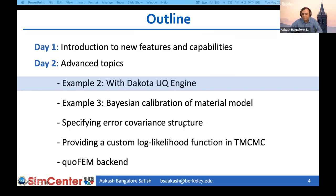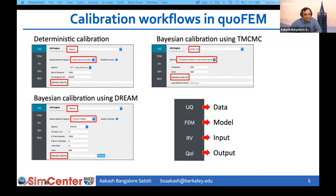I'll describe the default covariance structure of errors in Bayesian calibration within QuoFEM and show how users can override the default options. Next, I'll show how to provide a custom log likelihood function in TMCMC. Finally, we'll go over the QuoFEM backend, which helps users troubleshoot UQ analysis and extend QuoFEM's implementation. There are three options in QuoFEM for running calibration workflows: two use the Dakota UQ engine and the third uses the UCSD UQ engine.